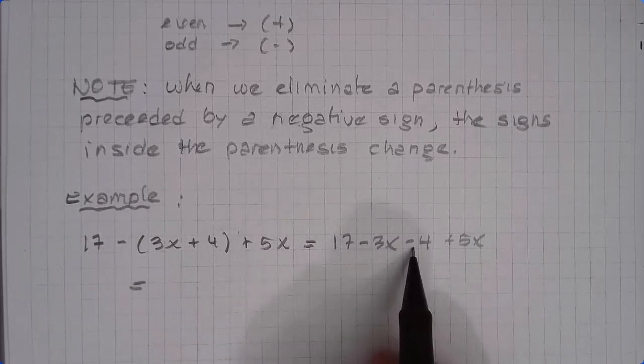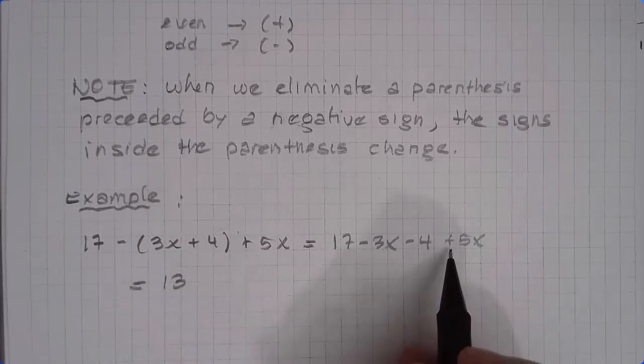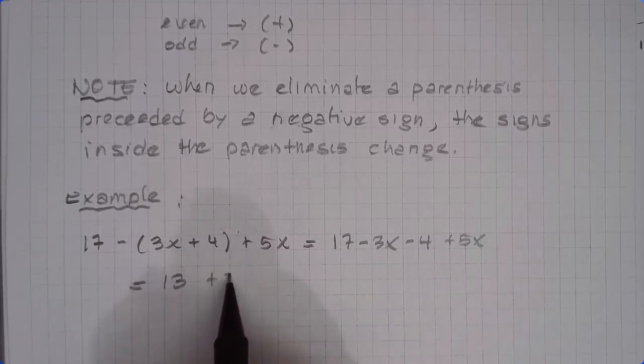17 minus 4 is 13. And negative 3x plus 5x is going to be 2x. And that's it.